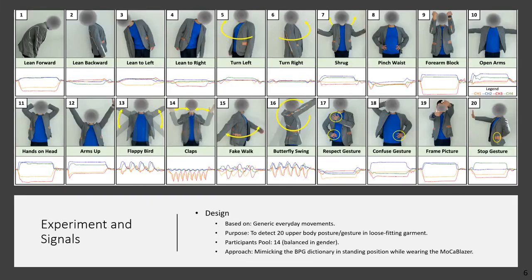To test an initial general dictionary and expand it in future work for a specific use case, we consider 20 body postures and gestures involving the upper body based on everyday movements as shown in the figure. And to detect those, 14 volunteers wore the MoCa blazer for five sessions. Each consists of four random repetitions per activity resulting in 400 instances per volunteer.